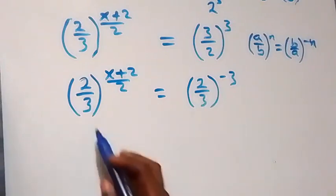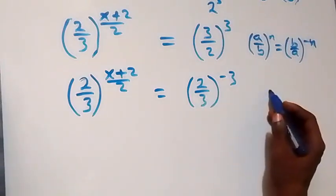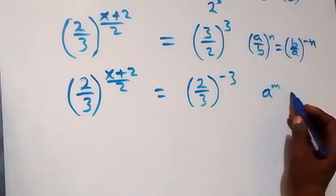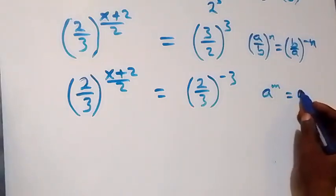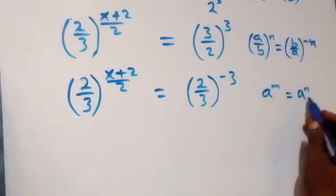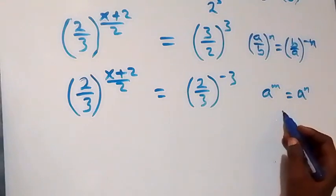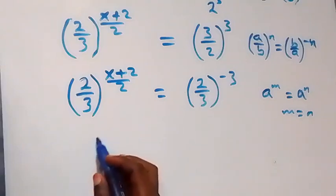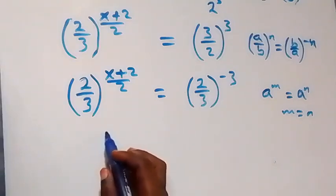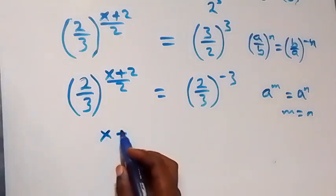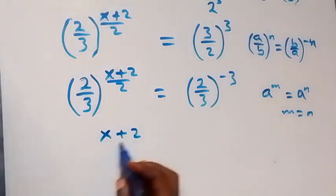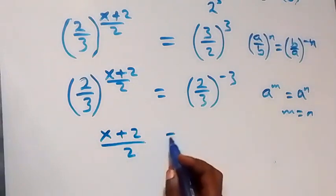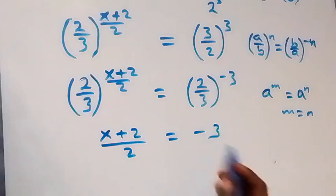Since we now have the same base on both sides, and when we have a raised to power m equals a raised to power n it implies m equals n, we can equate the exponents. So x plus 2 over 2 equals minus 3.